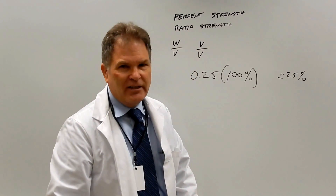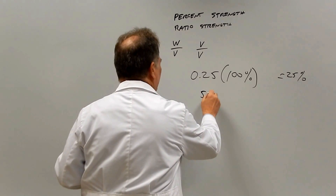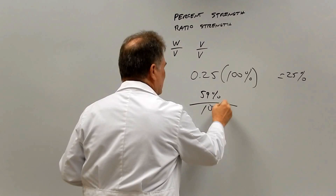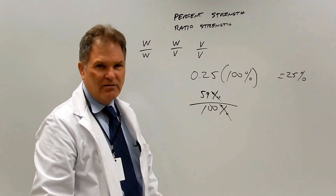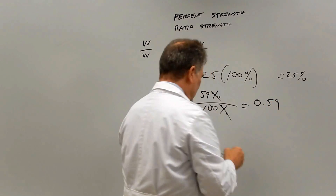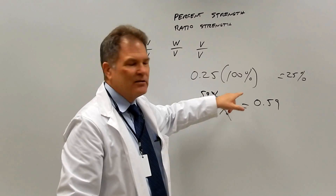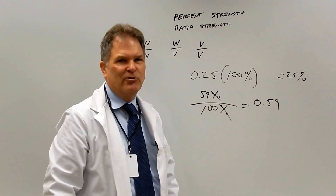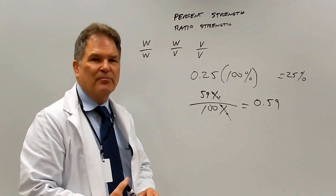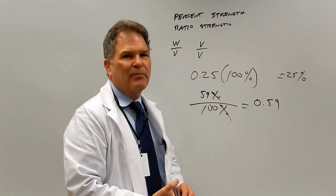If you want to remove the percent sign, you divide by 100%. So if we have 59% and get rid of the percent sign, divide by 100% — 59 over 100 equals 0.59. So to add the percent sign, multiply by 100%; to remove it, divide by 100%. This falls into the same system of multiplying by one.